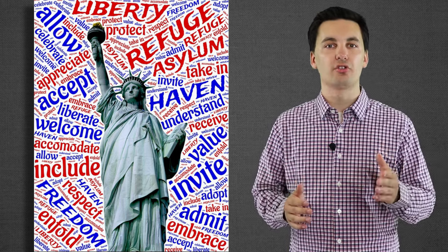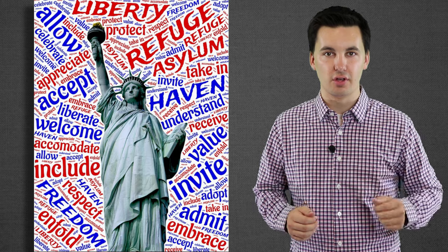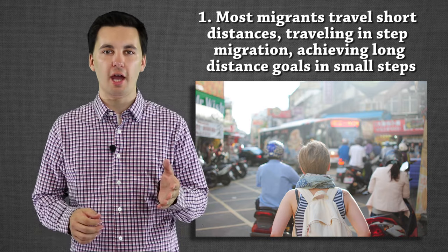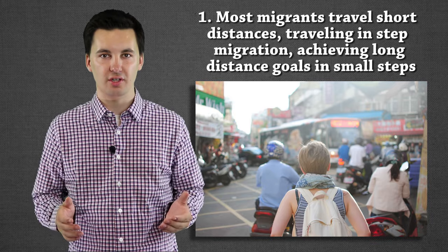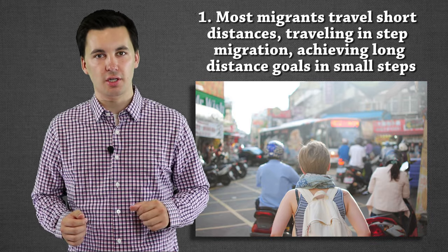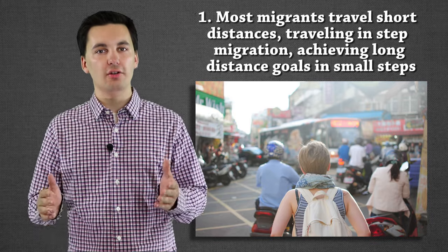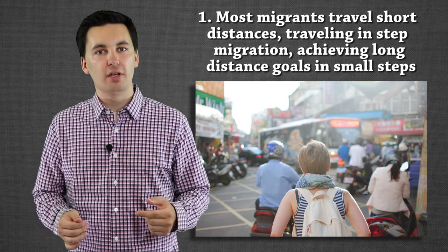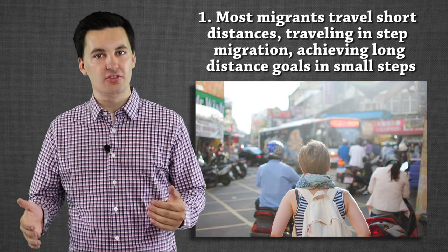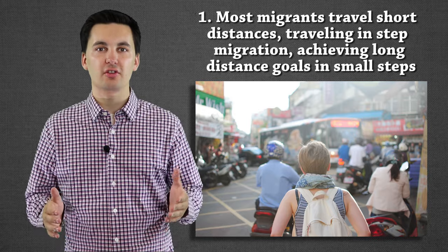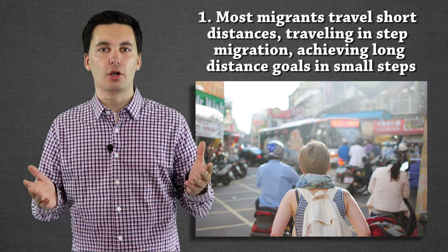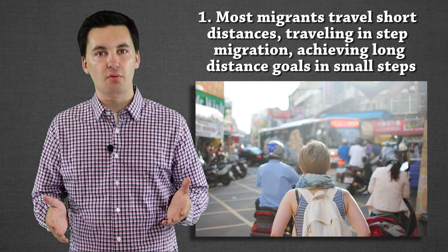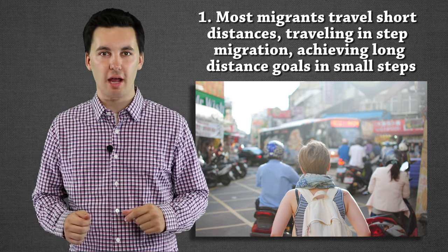Our first law is that most migrants are going to travel short distances through step migration. Over time they'll achieve long-distance goals, however it will take a while. Most migrants travel from city to city, going short distances at a time and in the long run being able to achieve a longer goal. Step migration is the majority of ways that most people are going to be traveling.